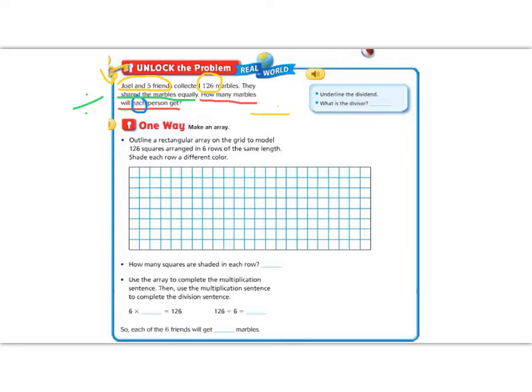Let's start with the blue box to fill in some information. It says, Underline the dividend. The dividend is the big number we're going to divide into. We circled it. That number is 126. And then it says, What is the divisor? The divisor is what we're going to divide by. We said Joel and five friends, so the divisor is six. So the problem that we're going to be solving is 126 divided by six.